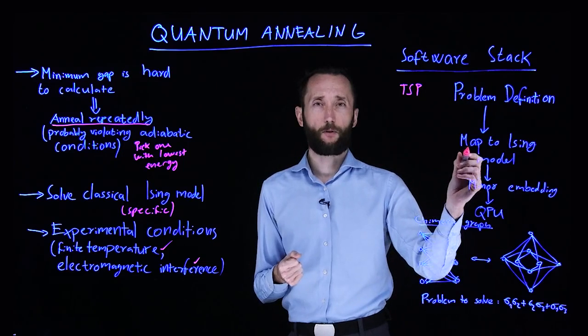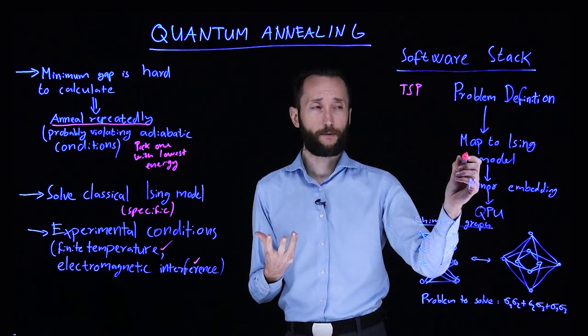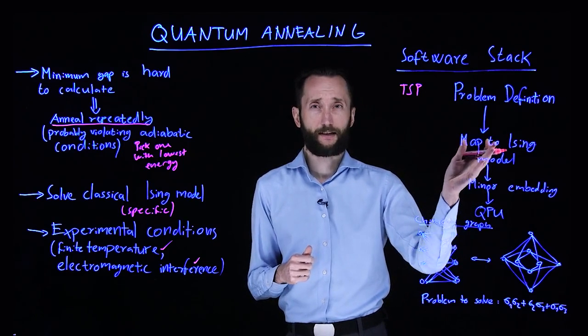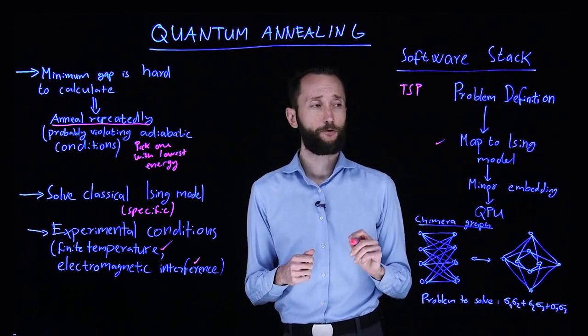Then it easily maps to an optimization, a quadratic binary optimization problem. So that's intrinsically an Ising model. So this is easy to do.